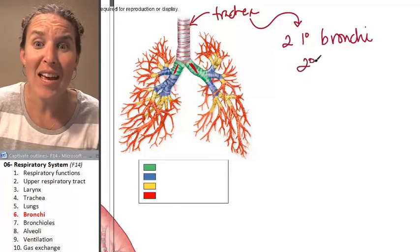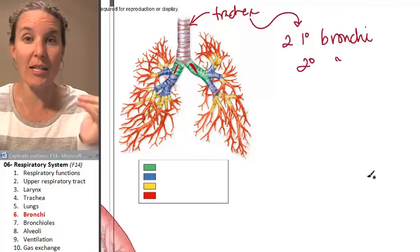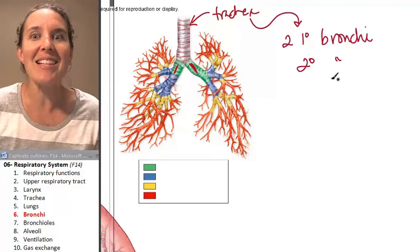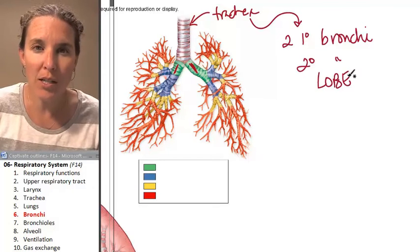Now, we have secondary bronchi. So each primary bronchus branches into secondary bronchi, and the secondary bronchi feed a lobe. Did you follow what I just said?